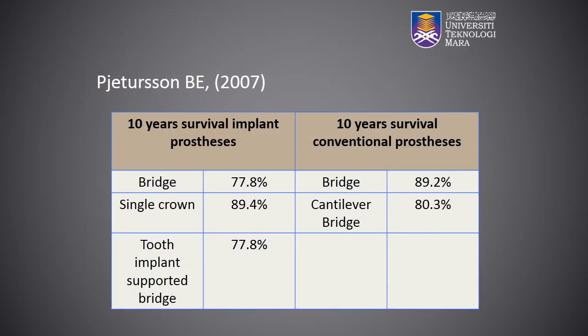The following table highlights the results of a study done by Tedjason in 2007. The 10-year survival rate for implant prostheses was 77.8% for both bridges and tooth implant-supported bridges, and 89.4% for single crowns. On the other hand, the survival rate for conventional prostheses over the same time period was 89.2% for bridges and 80.3% for cantilever bridges.